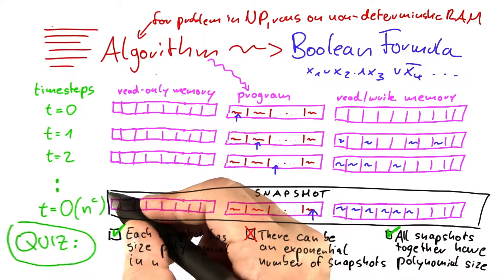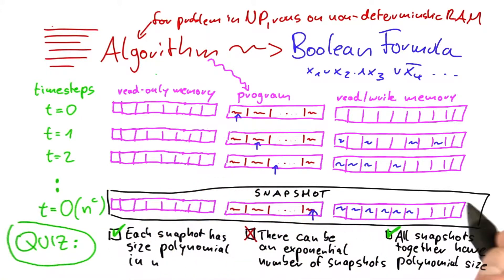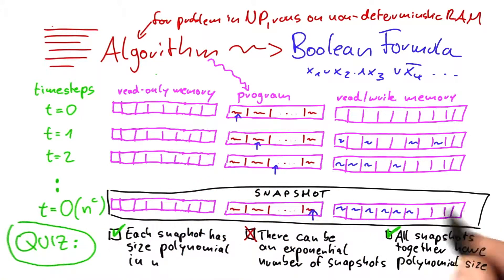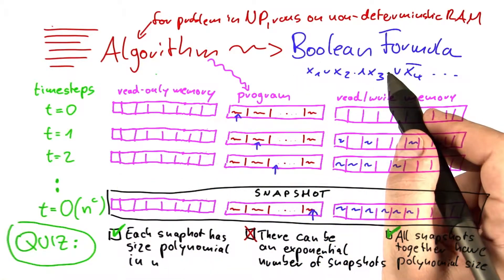What I will now show you is how you can encode a single snapshot, so for example, this one here or this one here, as a Boolean formula.